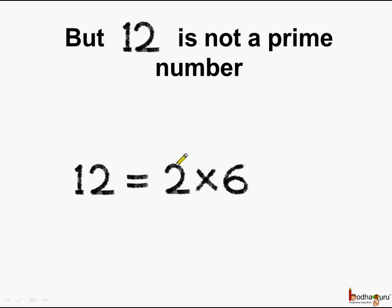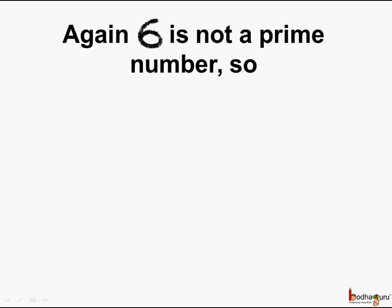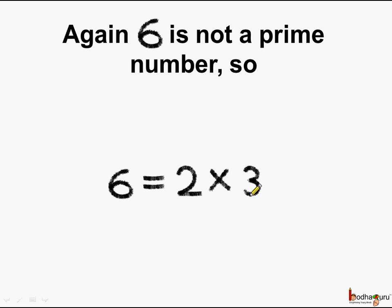Here again, 2 is a prime number. Again, 6 is not a prime number, so we write 6 as 2 multiplied by 3. What do we see here? Both 2 and 3 are prime numbers, and we cannot factorize 6 further.